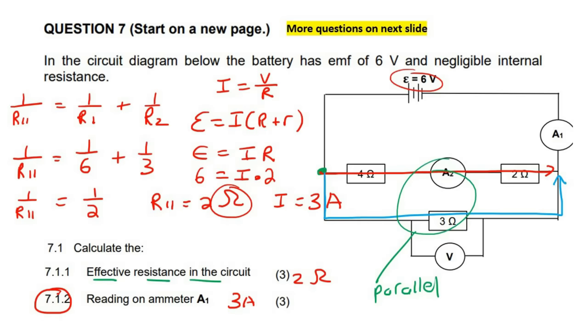And so where would 3 amps be? 3 amps would be everywhere in the main part of the circuit. So remember we said that the current goes like this, and then some of it goes this way, and some of it goes this way.